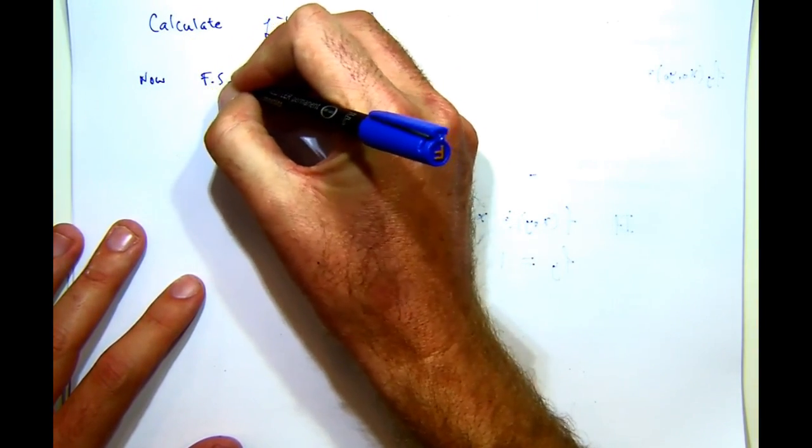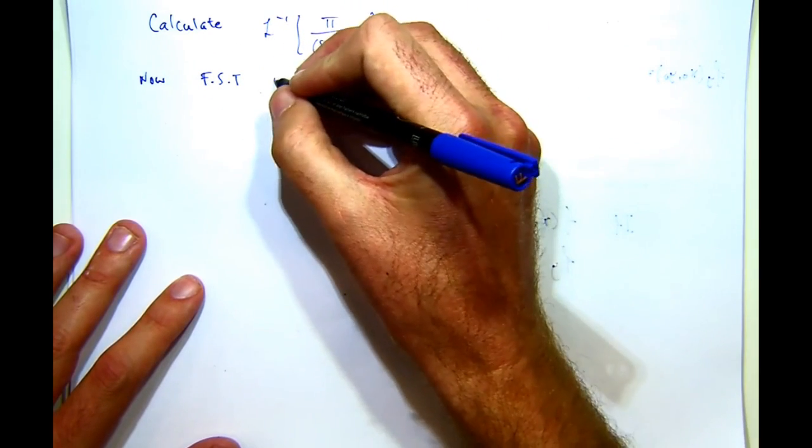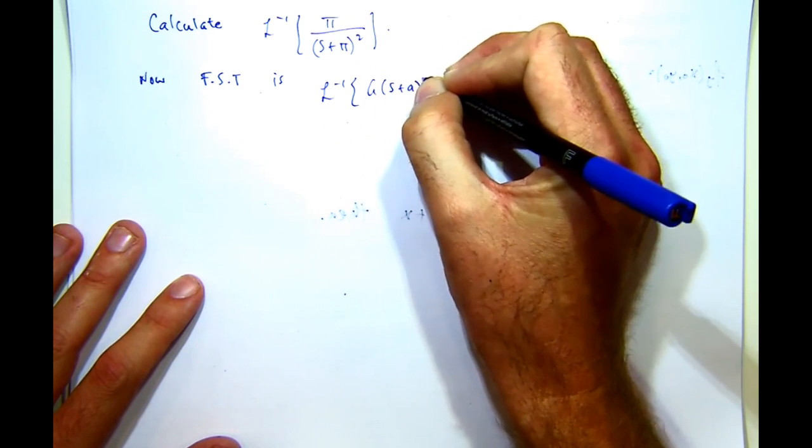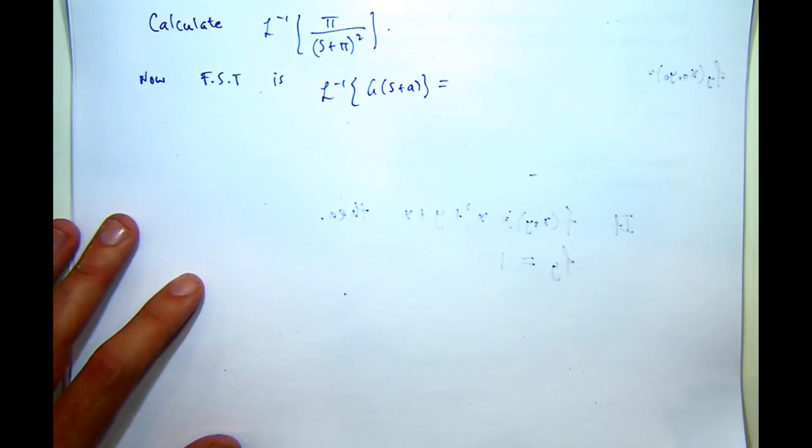I'm just going to write FST for first shifting theorem. So in this context, A is a constant.